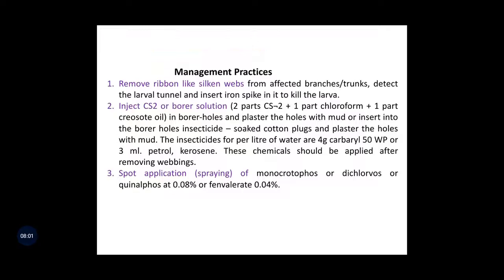Management practices: firstly, remove the ribbon-like silken webs from the affected branches or trunks. Then detect the larval tunnel and insert an iron spike into it to kill the larva. Then inject CS2 or borer solution. Also, spot application or spraying of monocrotophos or dichlorvos or quinalphos and fenvalerate is recommended.